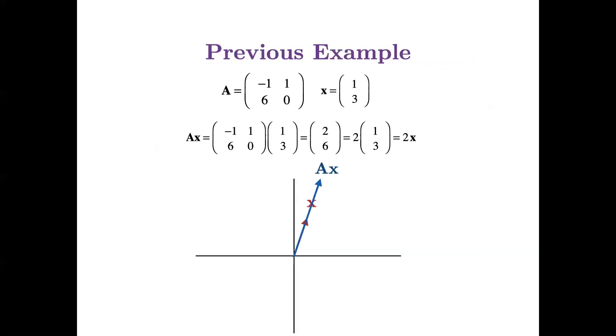So in this previous example, we had our A matrix and our x vector and when we multiplied A times x, if we compare what we started with, one, three, and what we ended up with, two, six, we see that what we ended up with is just two times one, three, what we started with. So the eigenvalue in this example is two. And that's the eigenvalue associated with this eigenvector. And that eigenvector is associated with that matrix.